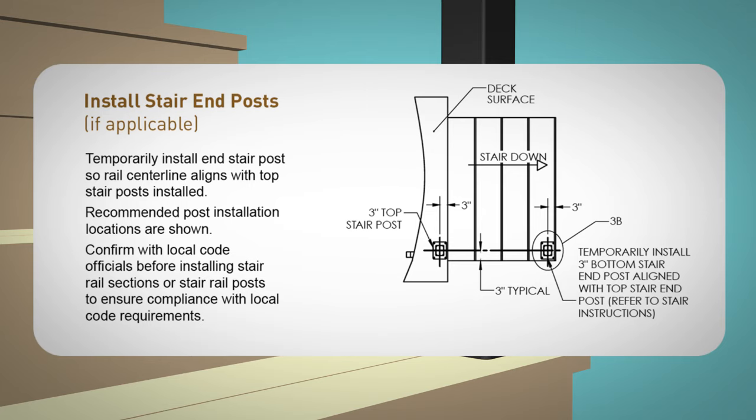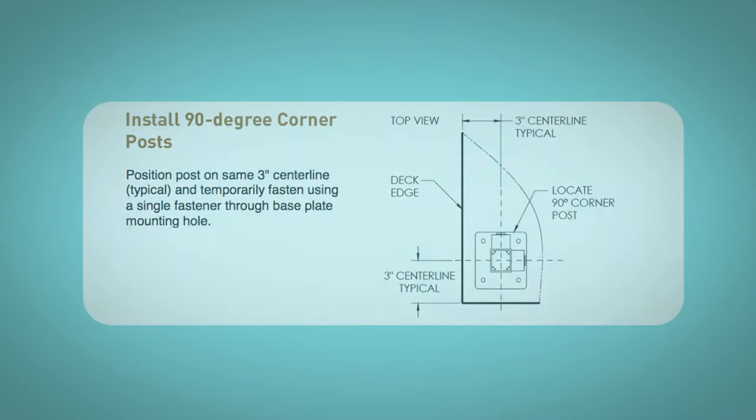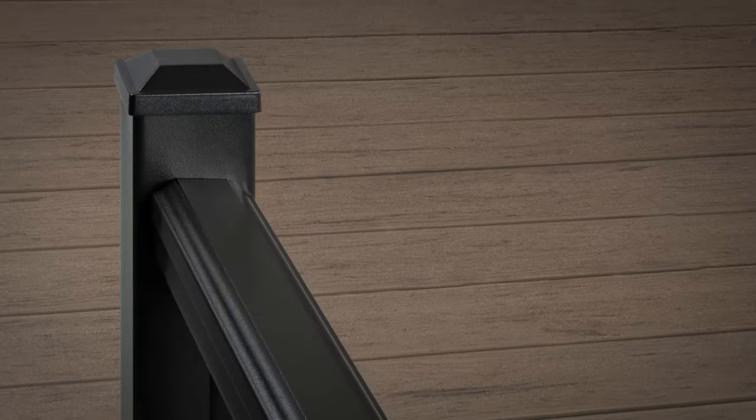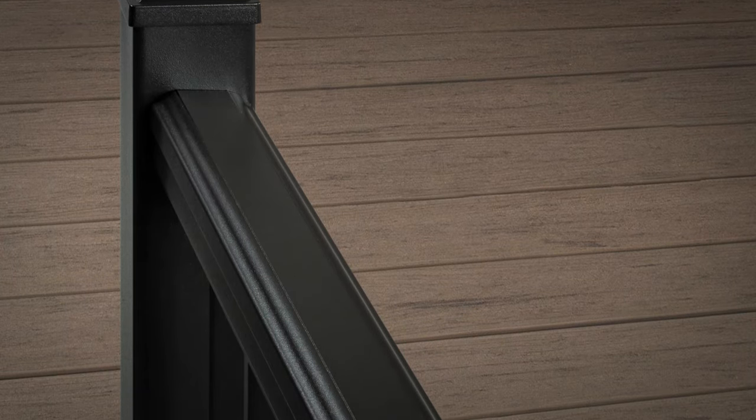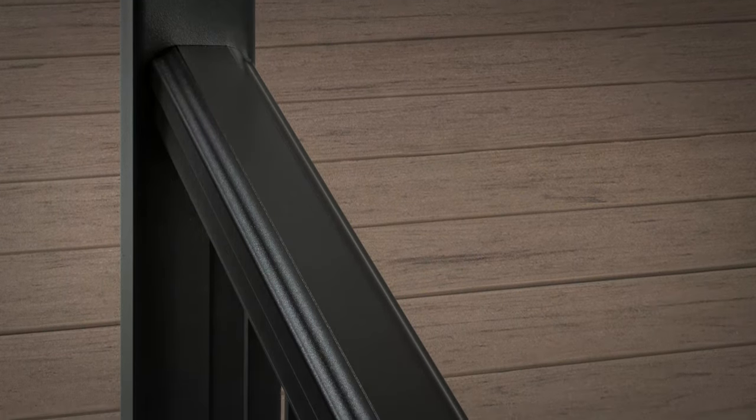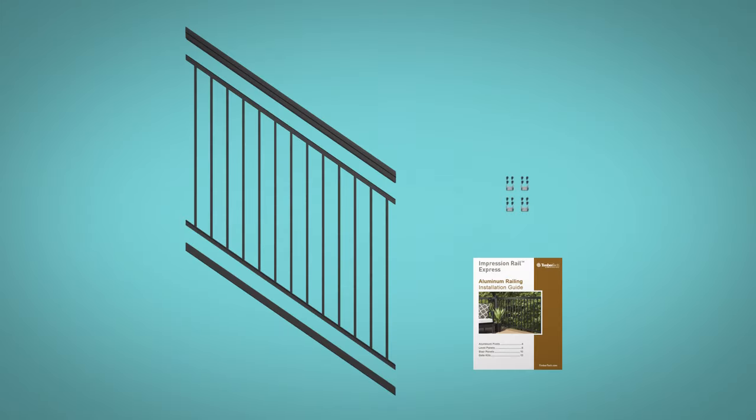Position the post on the same 3 inch center line and temporarily fasten using a single fastener through base plate mounting hole. Check with your local regulatory agency for special code requirements in your area. For all other applications, consult a design professional or an ASAC railing representative for more information.